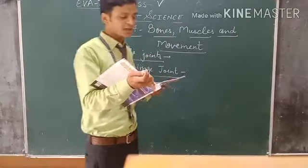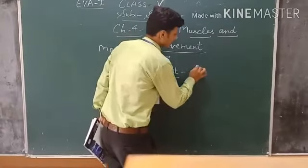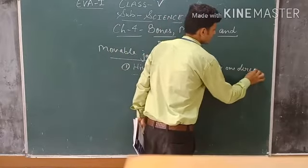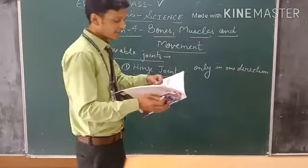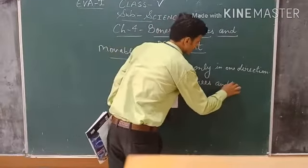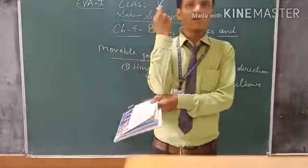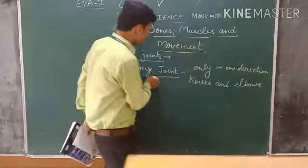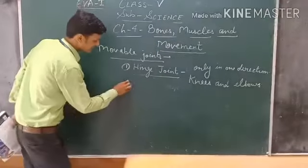The first type of movable joint is the hinge joint. It allows the bone to move only in one direction. It is found in knees and elbows. For example, you can move your elbow in one direction but not in the opposite direction.